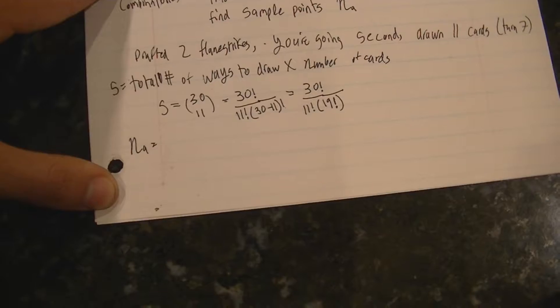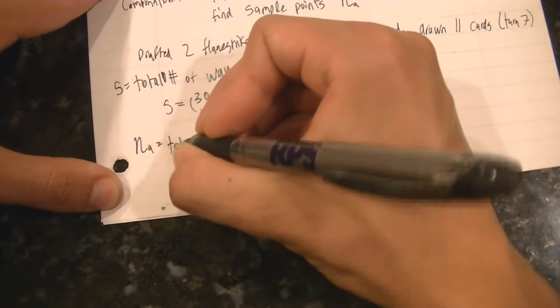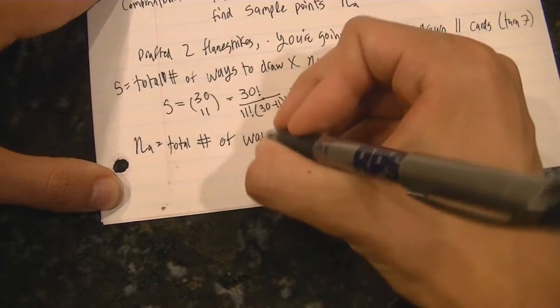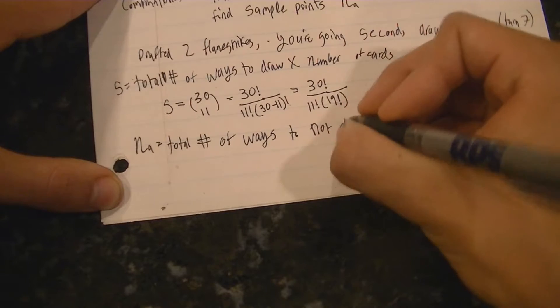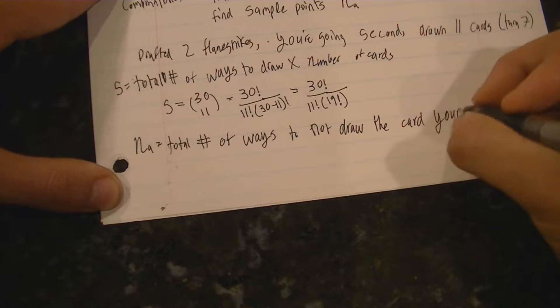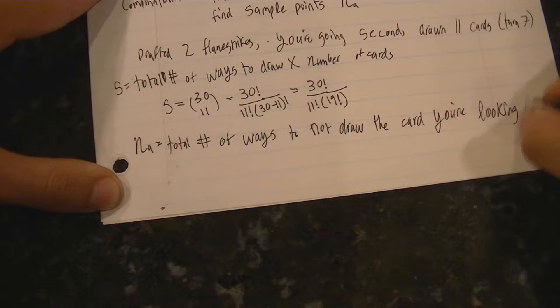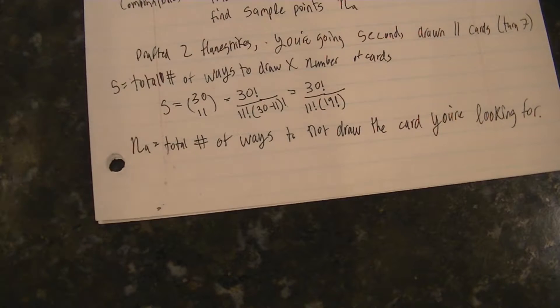Now similarly to last problem where we calculated the probability to not draw a keeper by turn seven, we're now going to look at the number of ways to not draft a flamestrike after 11 draws. So if you imagine you have a deck now with the same exact composition but it's missing the two flamestrikes, you can look at the number of ways you could draft 11 cards from the deck without any flamestrikes.